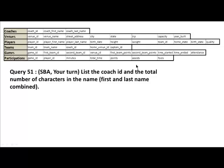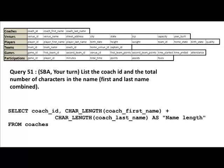So you probably got this query: SELECT coach_id, CHAR_LENGTH(coach_first_name) + CHAR_LENGTH(coach_last_name) AS name_length FROM coaches. The CHAR_LENGTH string function gives you the length of a string field, so we get the length of the first name, the length of the last name, add the two together, and give that computed expression the alias name_length.